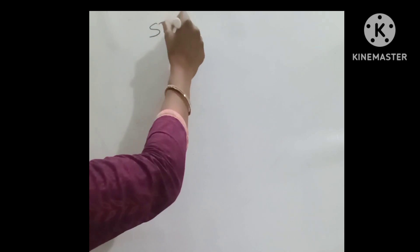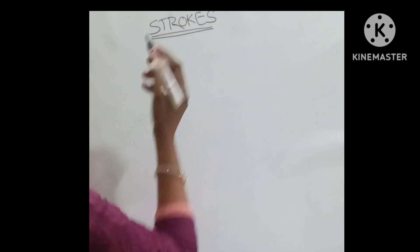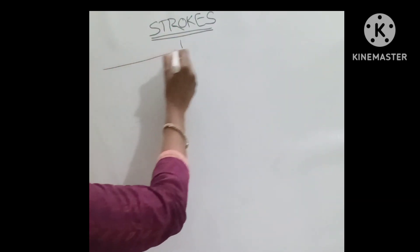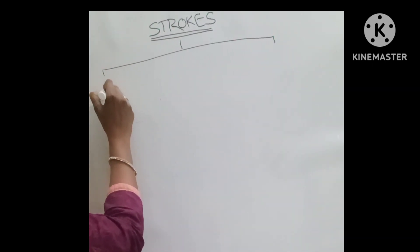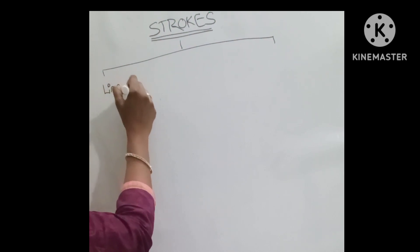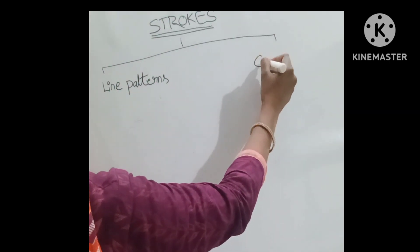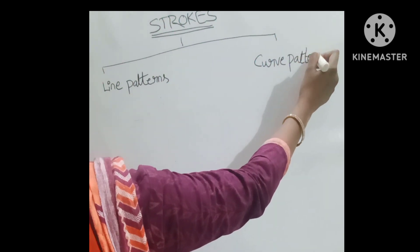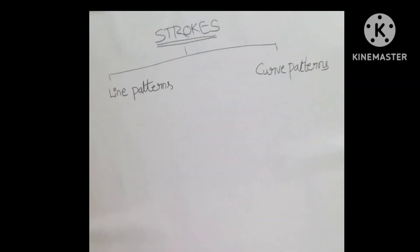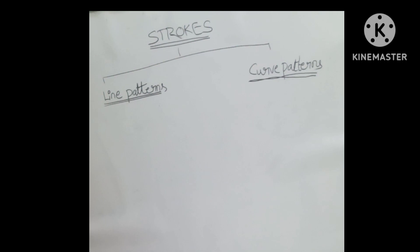Today we will learn about strokes. We have two types of strokes: line patterns and curve patterns. We have five line patterns and five curve patterns.